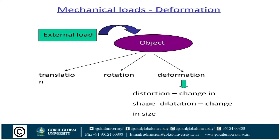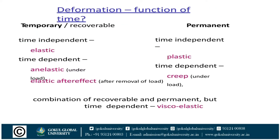Whenever we apply an external load on an object, the object may respond in one of three categories: it may undergo translation, rotation, or deformation. Deformation may be divided into two categories: first, distortion, which is a change in shape; and second, a change in size. This is called deformation.